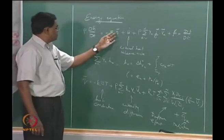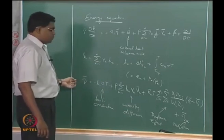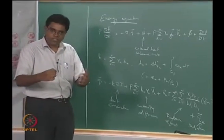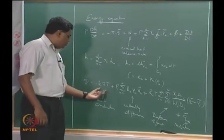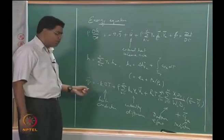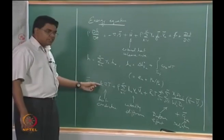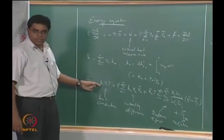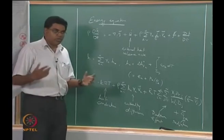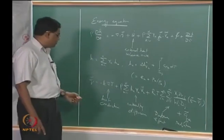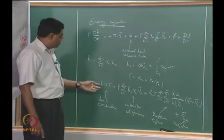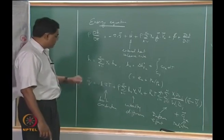Now let us look at the second term — this is the first term on the right-hand side — which is the q vector, the heat flux vector. The heat flux vector comes from the sides of a particular point in the domain. The first contributor is the conductive heat flux given by Fourier's law, assuming a fluid satisfying Fourier heat conduction. Here k is the thermal conductivity of the mixture. When you have a mixture of many species, k is a transport property of the mixture, which we would need to go back to kinetic theory to deduce.